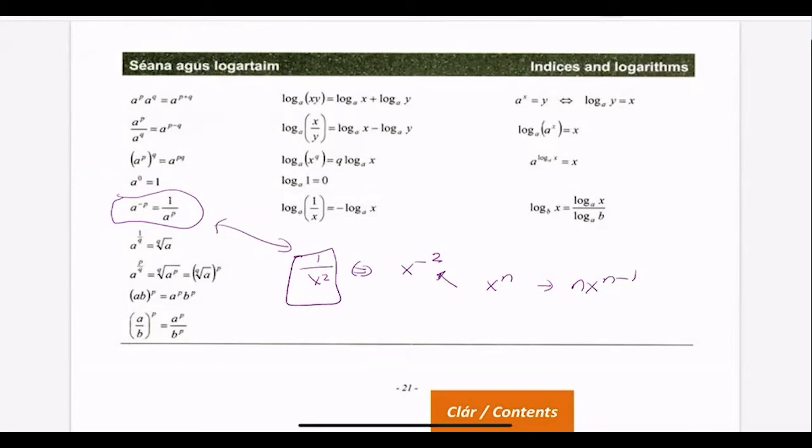Inherent in the square root sign is a little 2, but we don't write it because square root is so common. If I had x³ and need to find x, that's the cube root.